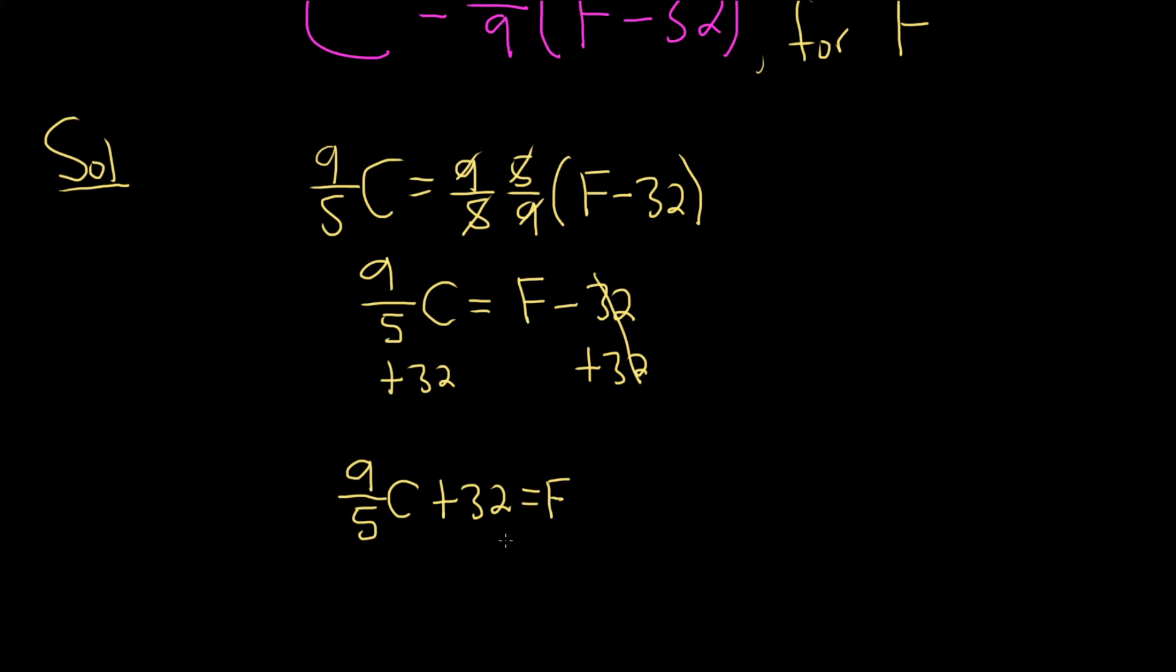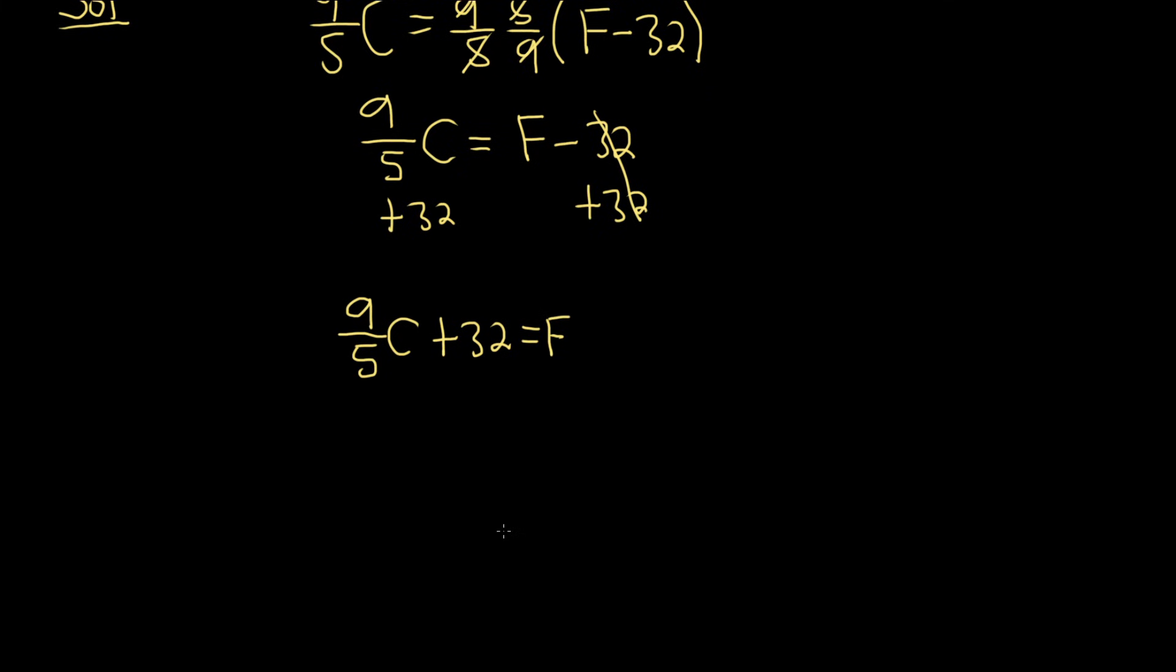If you want, you can write the F on the left-hand side. I'll do that because it looks better. So this is F equals 9 fifths C plus 32. And that would be the final answer. That's it.